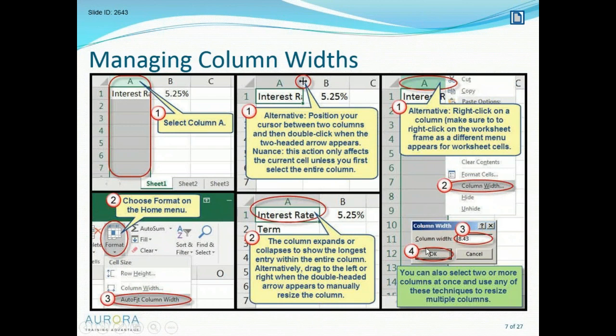An alternative is to right-click on a column. Right-clicking is a great idea in Excel because wherever you right-click you get a context-specific menu with the most frequently used commands for that area. When you right-click a column, you have a choice to adjust the column width. Choosing Column Width brings up a dialog box where you type in a number. This lets you select two or more columns at once and set them all to exactly the same specific size.